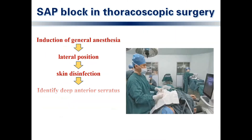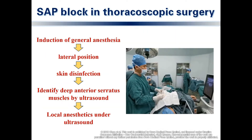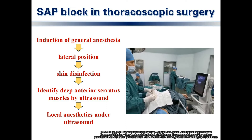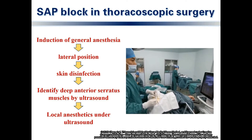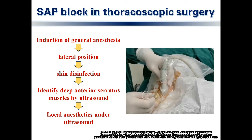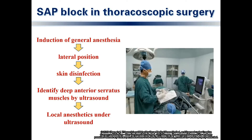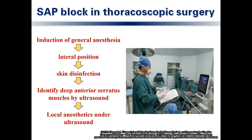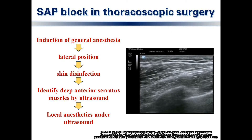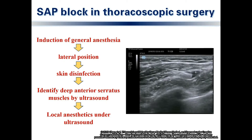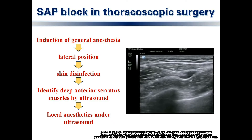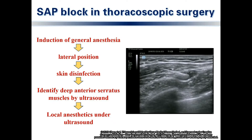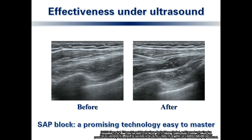We performed the SAP block in the lateral position after induction of general anesthesia. After skin disinfection, the ultrasound probe was placed in the mid-axillary line between the 5th and 6th ribs. It is easy to identify the superficial latissimus dorsi muscles and deep anterior serratus muscles. Using the in-plane technique, local anesthetics were injected into the fascial plane, and under ultrasound, the segments can be seen to be propped up by local anesthetics.